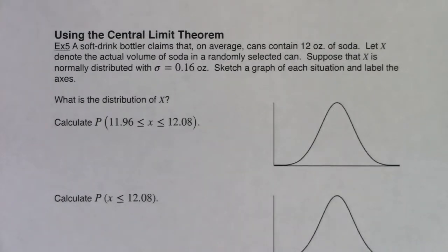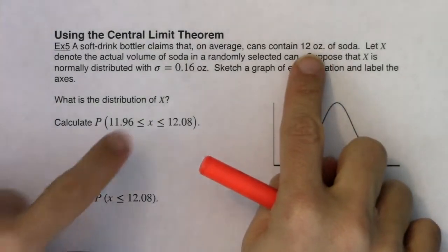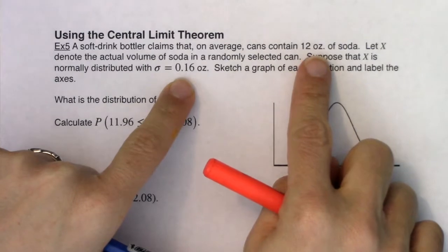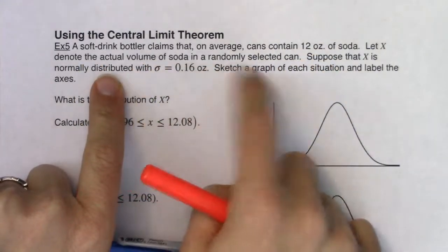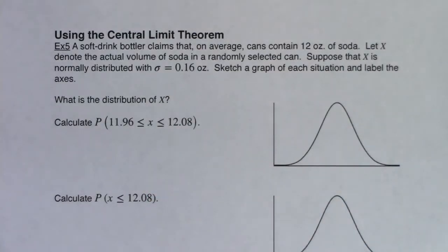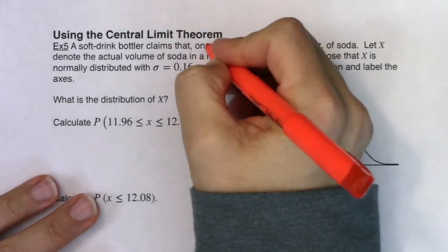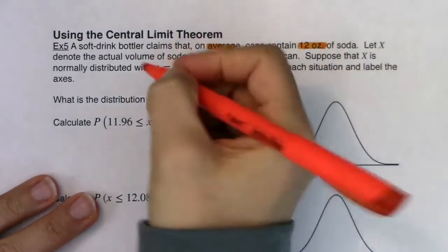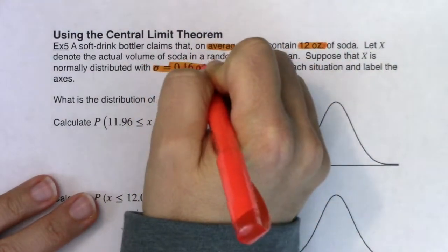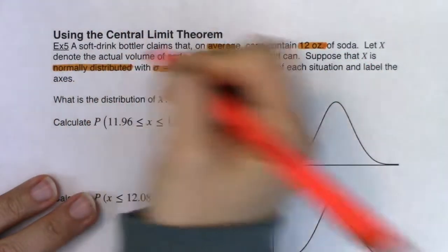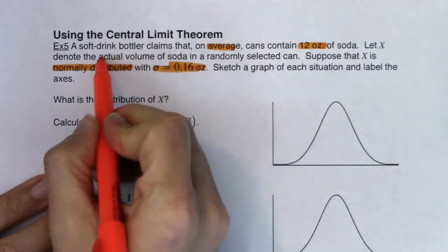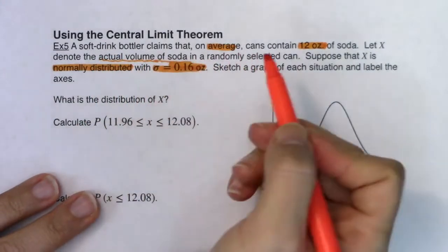What's the distribution of x and can we calculate a whole bunch of probabilities? So first of all, what was the variable in this problem? If you look at the numbers and the units associated — 12 ounces and 0.16 ounces — we're talking about ounces of something. It says right here: it's the volume of soda in a randomly selected can. So let's note some important phrases: average 12 ounces, standard deviation of 0.16 ounces, normally distributed. The actual volume of soda — that's my variable.